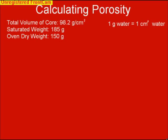It is fairly easy to calculate porosity when you have bulk density and particle density and you can use the relationship, but sometimes you don't have these values and you need to actually calculate porosity from scratch. So in this case, we calculated the volume of our core to be 98.2 cubic centimeters.